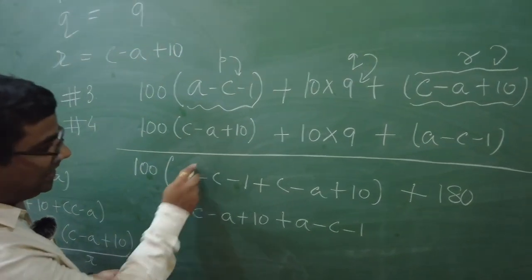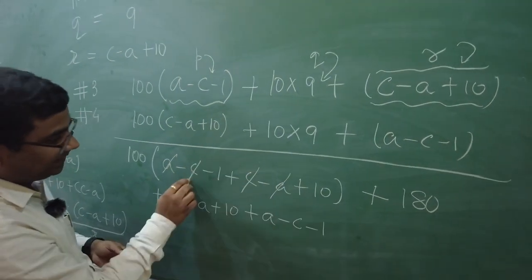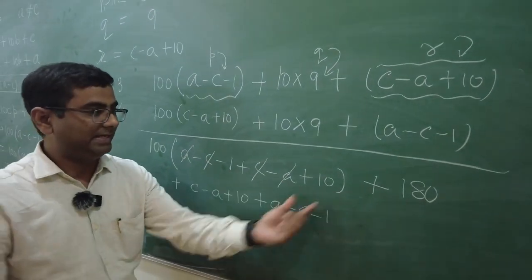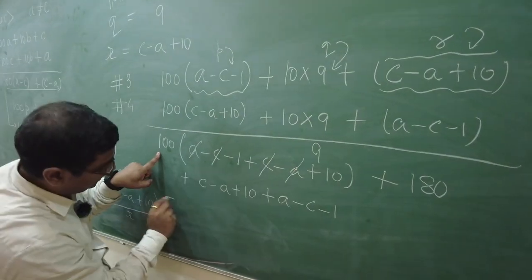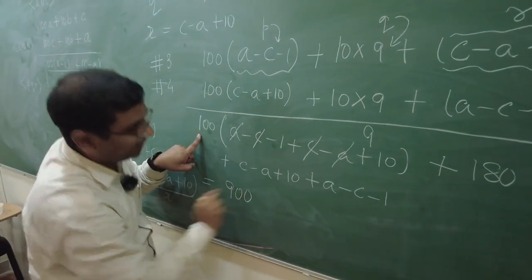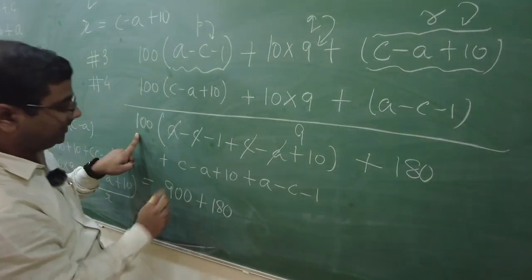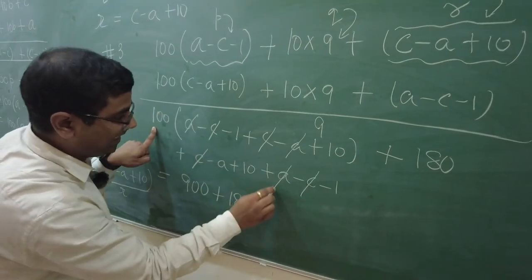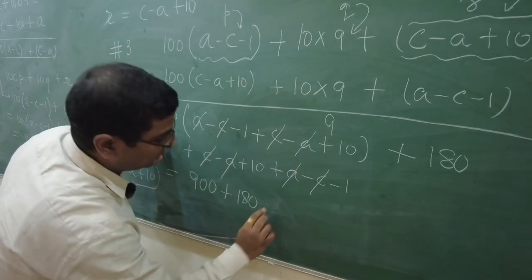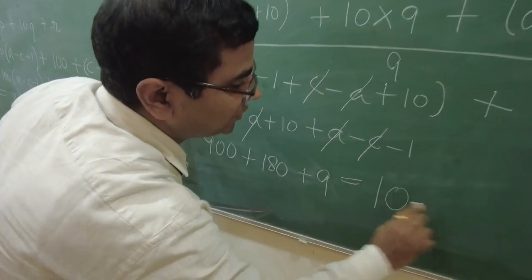Now, the mathematics, the algebra is very simple here. A and A gets cancelled. C and C gets cancelled. Minus 1 plus 10 is 9. 9 times 100. Let me write it here. 900. Isn't it? Then, plus 180. And, this C goes, A goes, 10 minus 1 is 9.